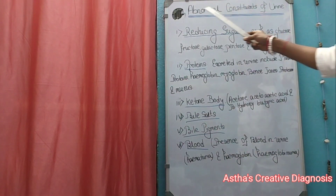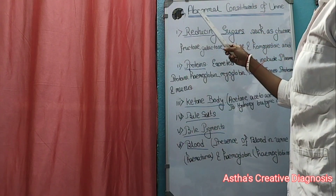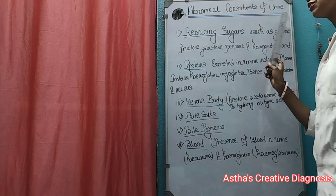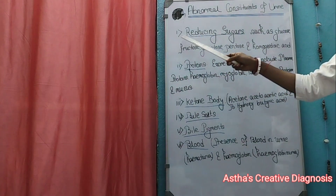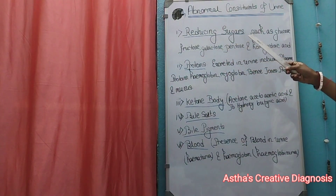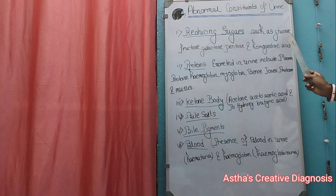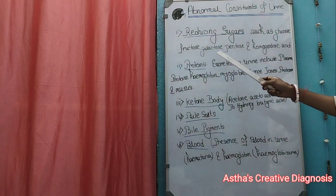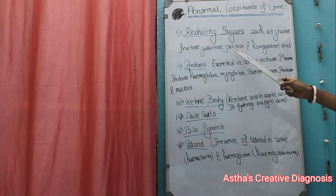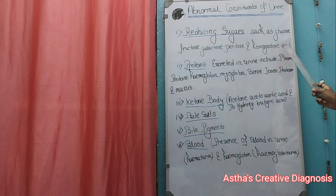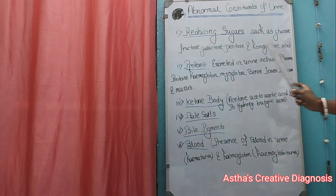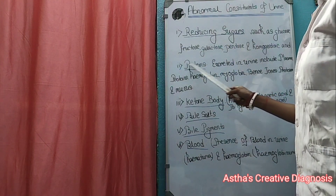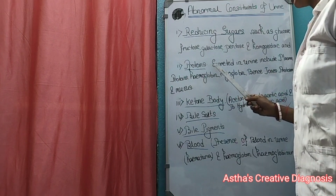Now let's talk about abnormal constituents. First, reducing sugars such as glucose, galactose, phenols, and homogentisic acid. Number two: abnormal proteins excreted in urine.